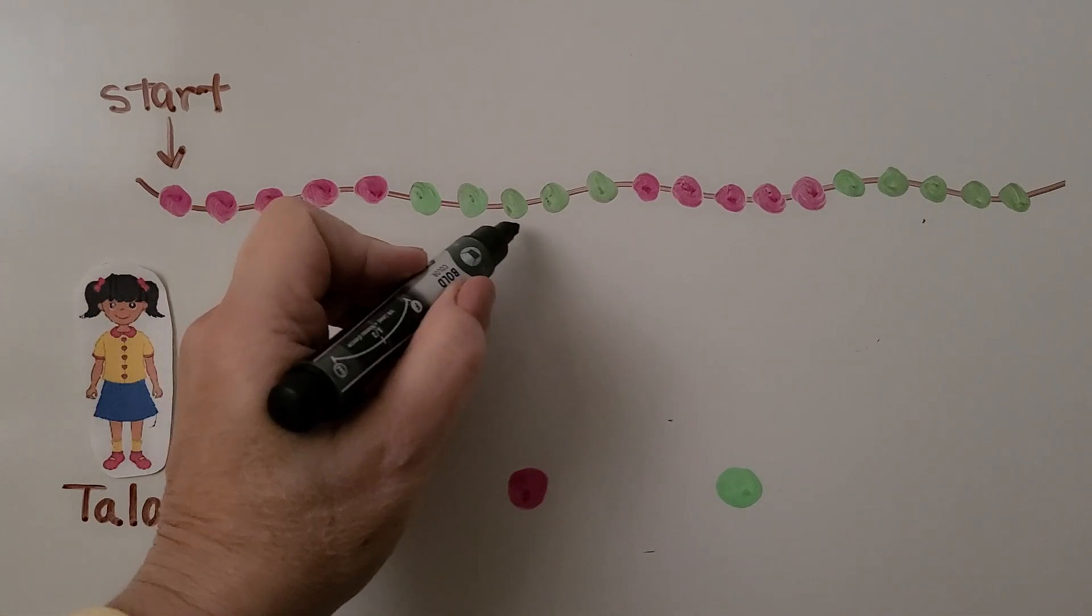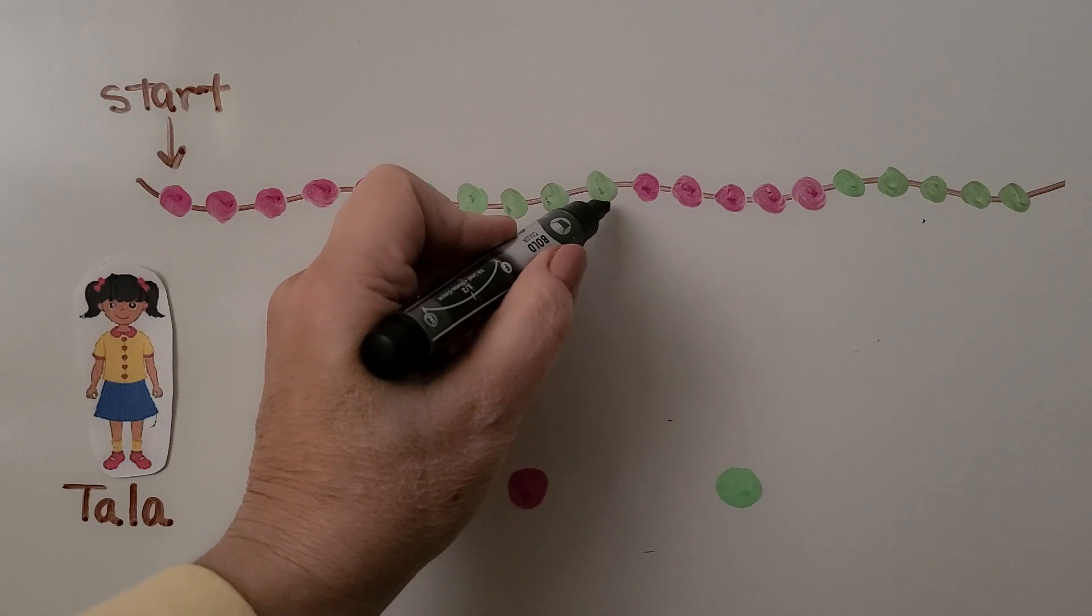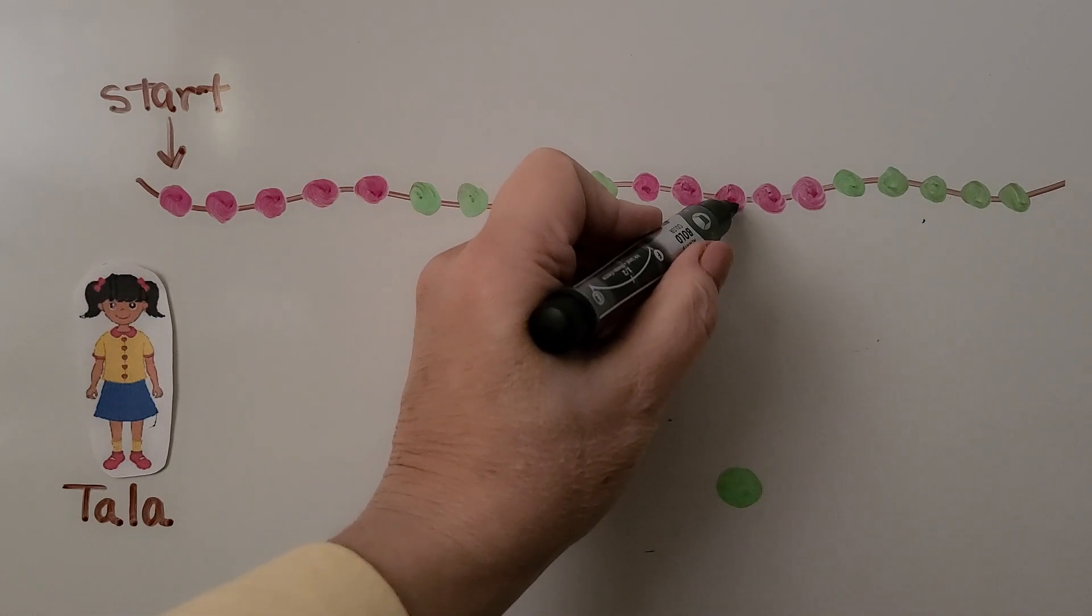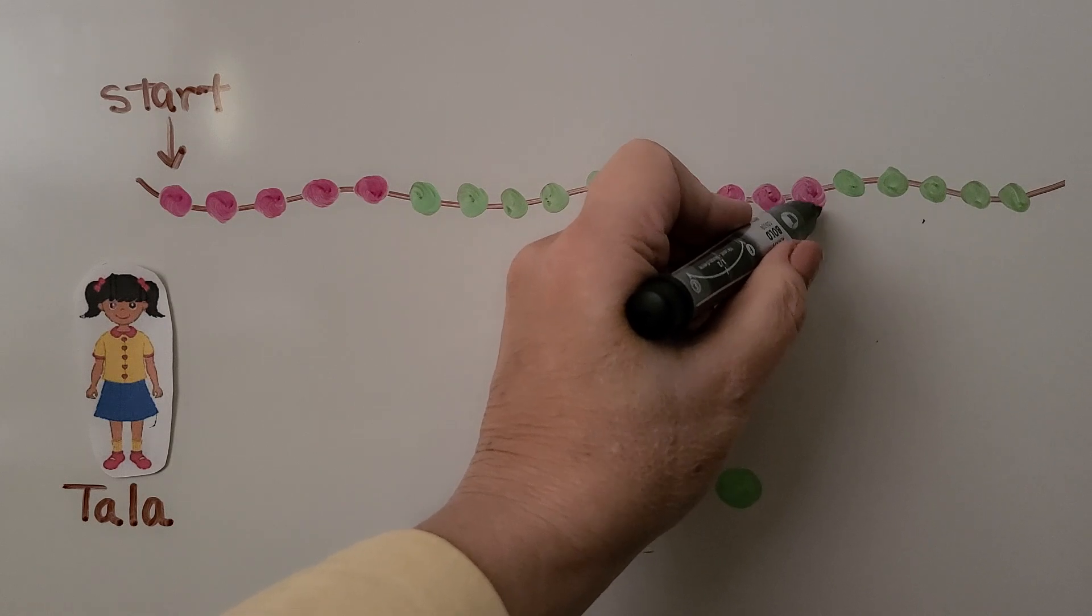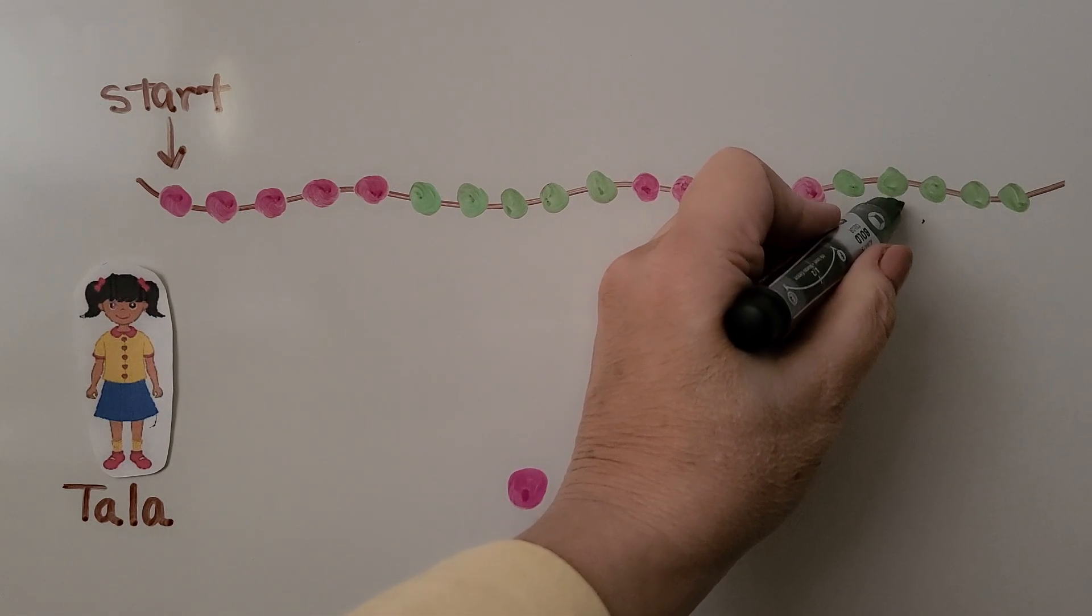6, 7, 8, 9, 10, 11, 12, 13, 14, 15. We need 17. We're at 15, 16, 17.